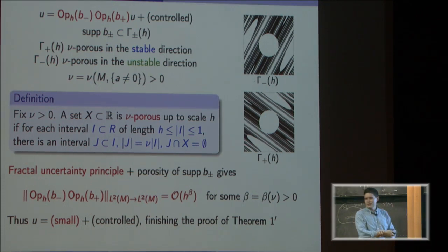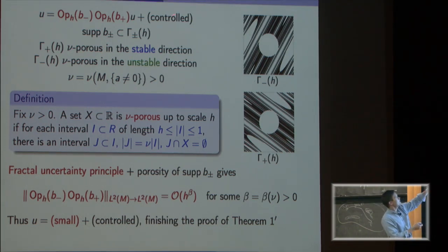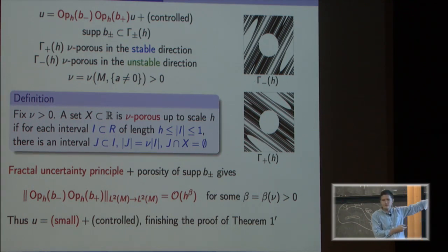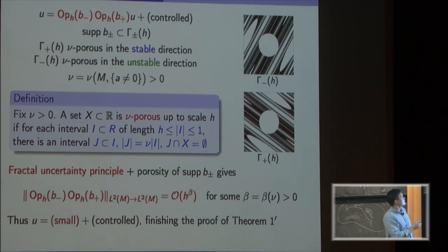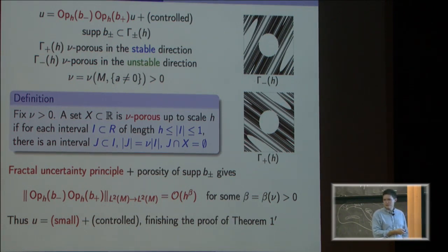Once the product of localizing operators has small norm, you see that u equals something controlled plus something small. That's exactly what was needed. The previous argument used microlocal analysis and long-time propagation to write u as a product plus something controlled. At this point, you stop using that u is an eigenfunction and just use that the localization gives small norm. That finishes the proof of the theorem.